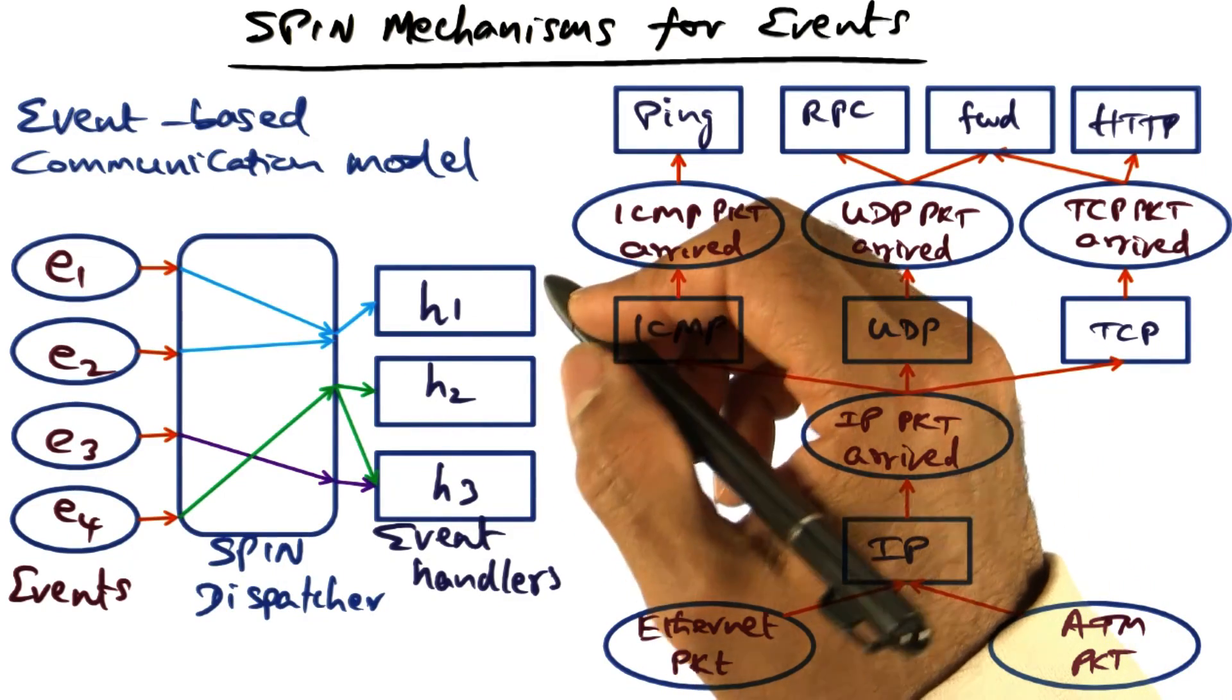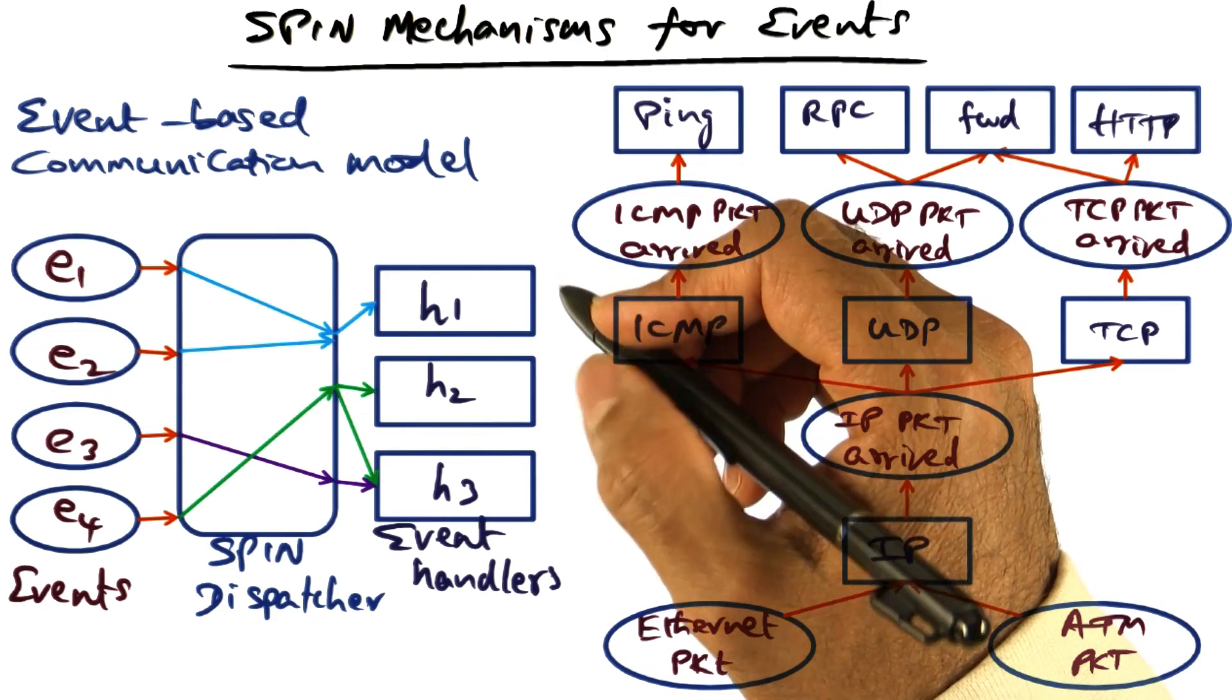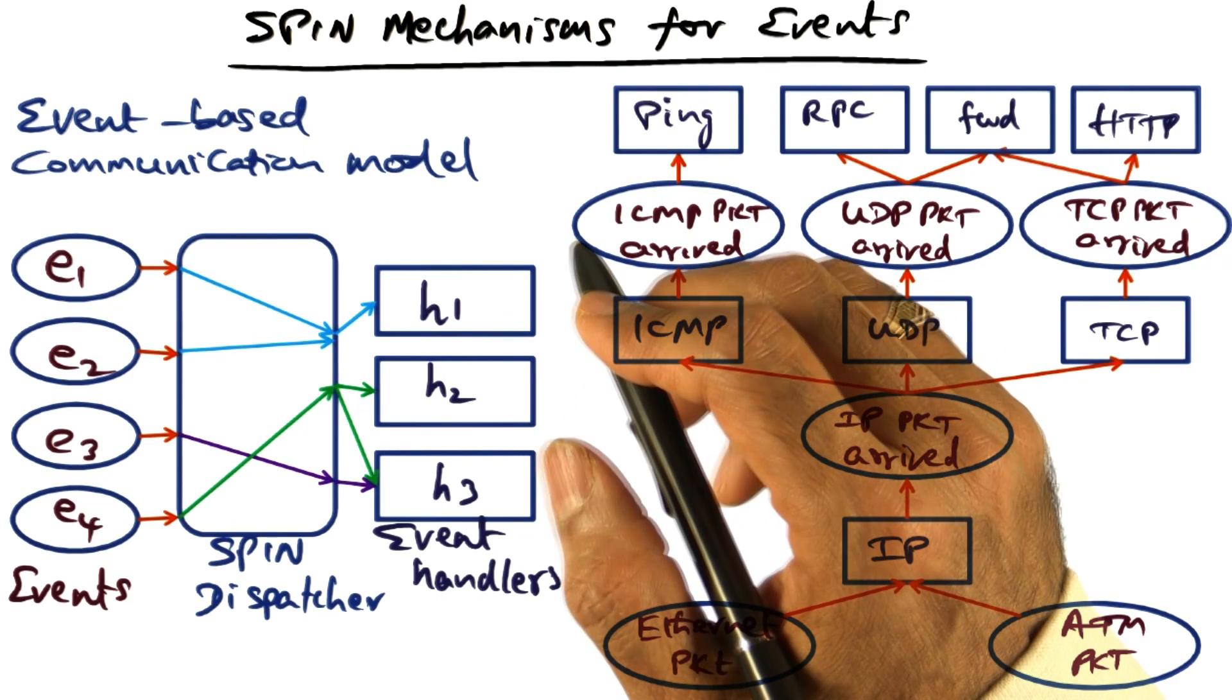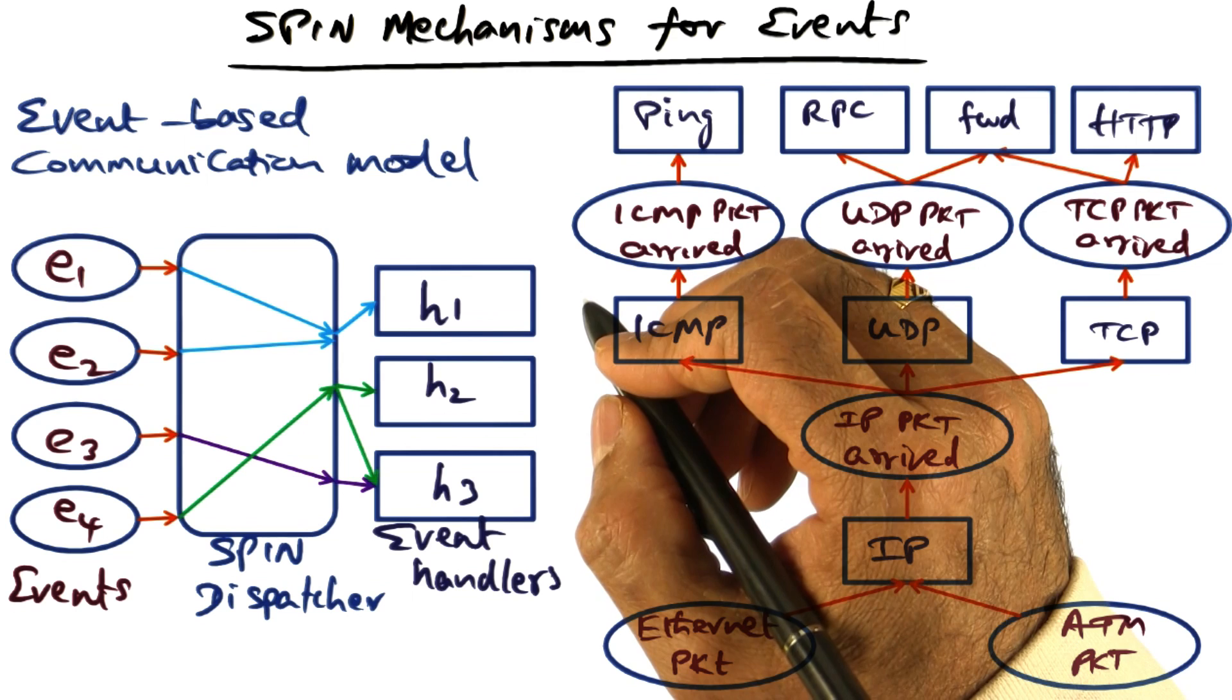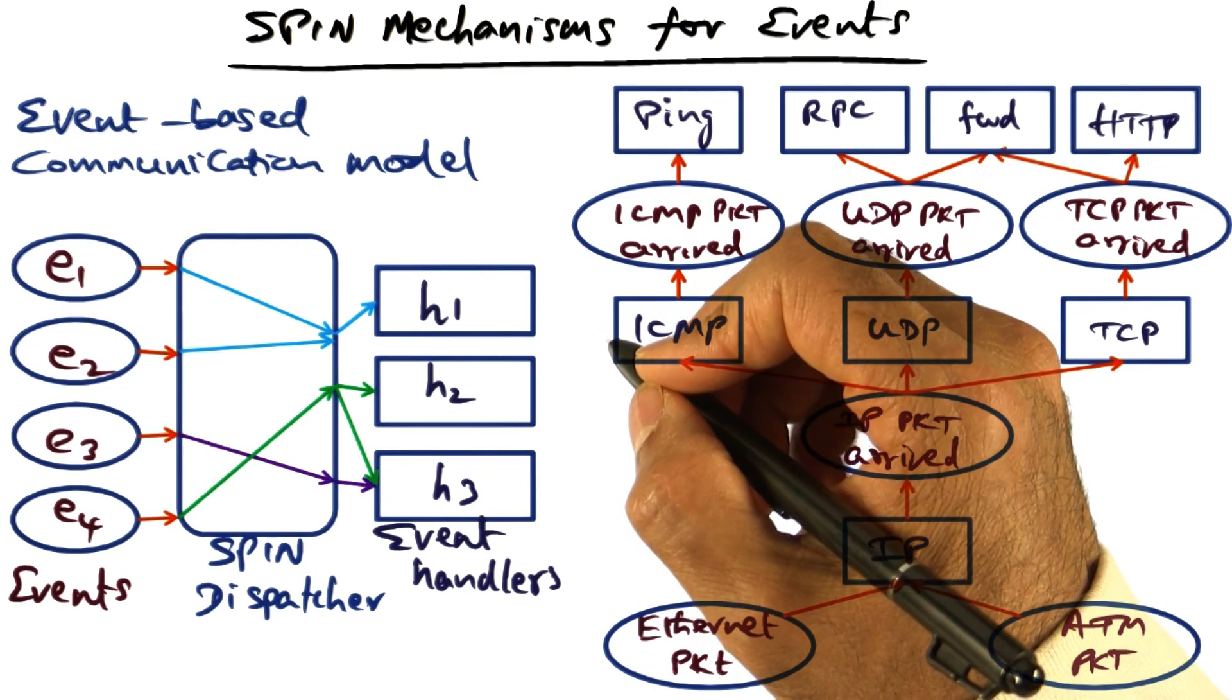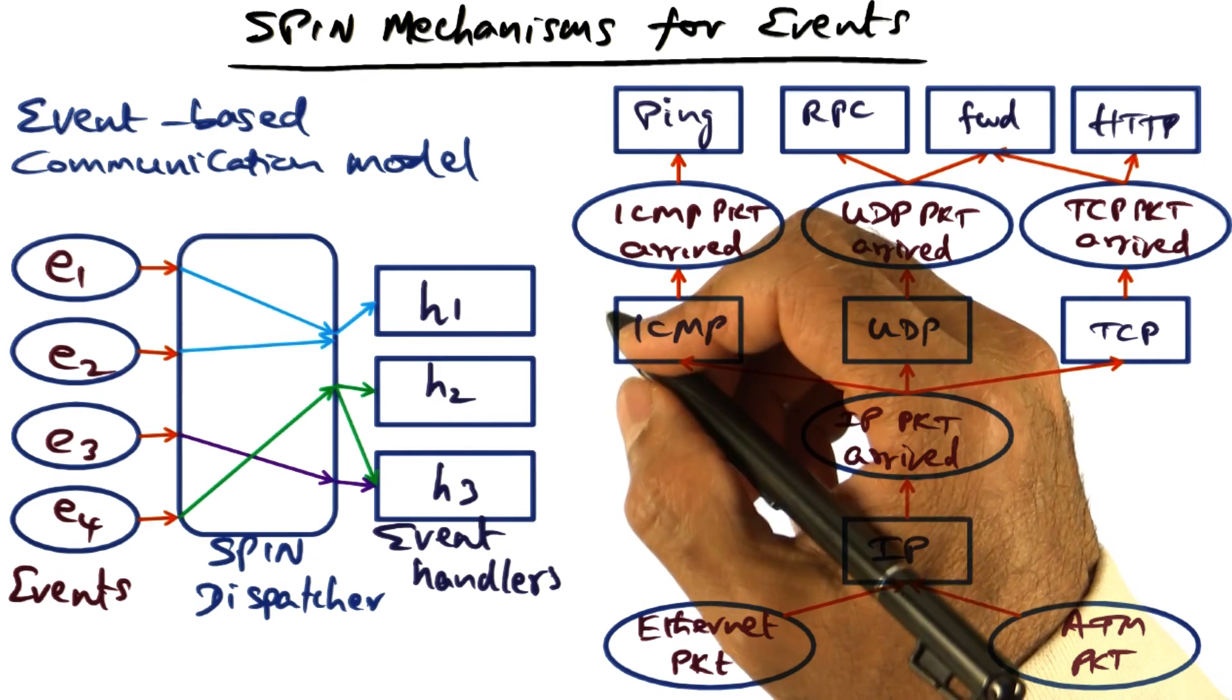An operating system has to field external events. For example, external interrupts that may come in when a process is executing, or the process itself may incur some exceptions, such as a page fault, or it may make system calls. All of these are events that need to be fielded by the operating system, and SPIN has to support such external events.